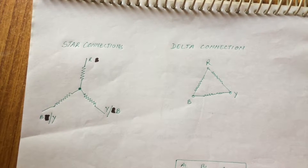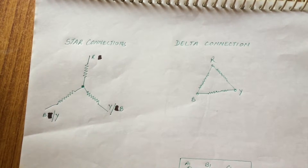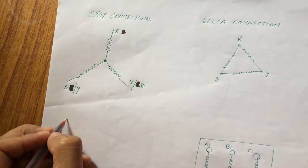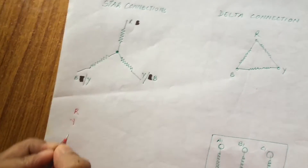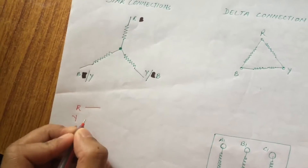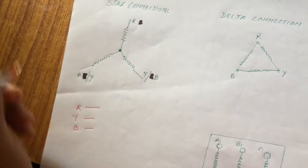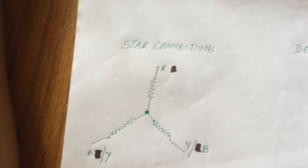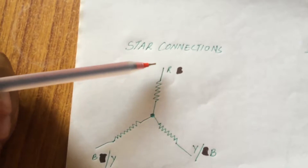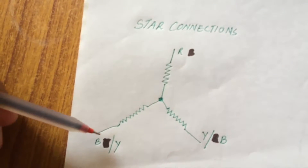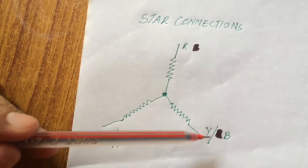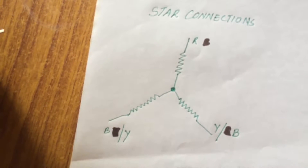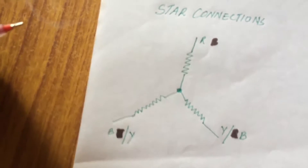When we are talking about star or delta connection, then we are talking about three phase supply. To make a star connection, we need to connect all the three phases — red phase, yellow phase, and blue phase — at one point. We call that point neutral.